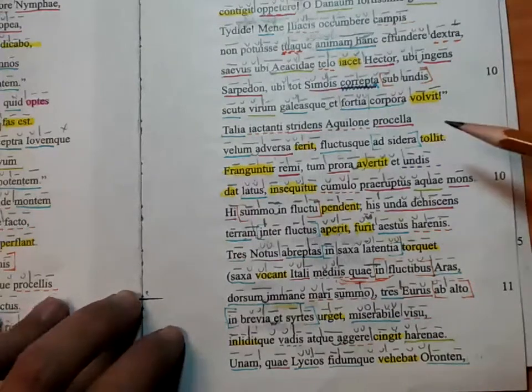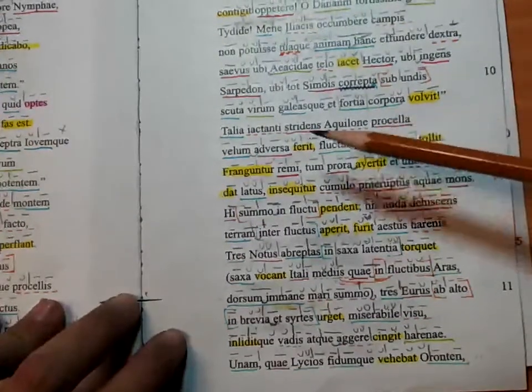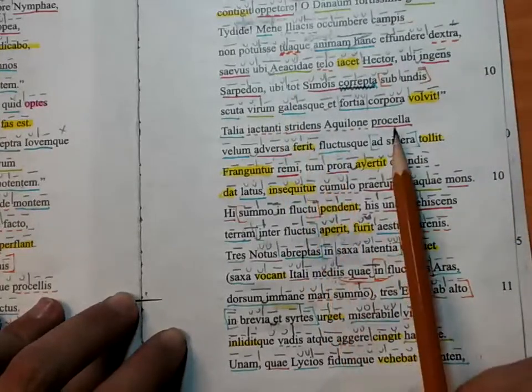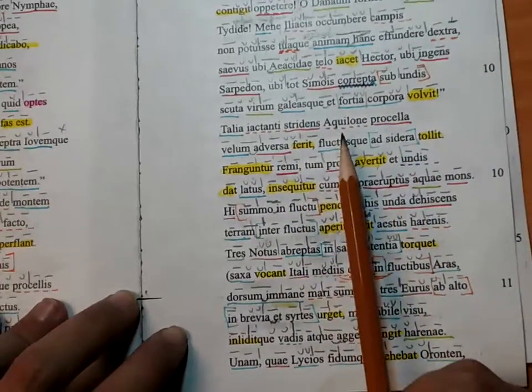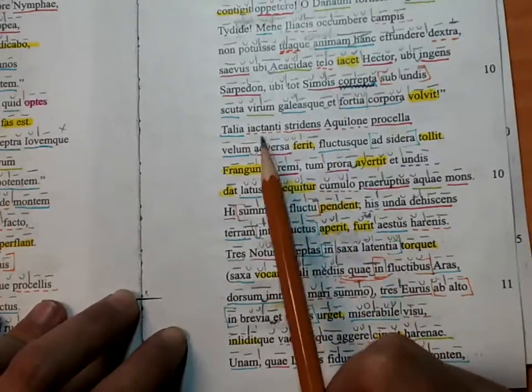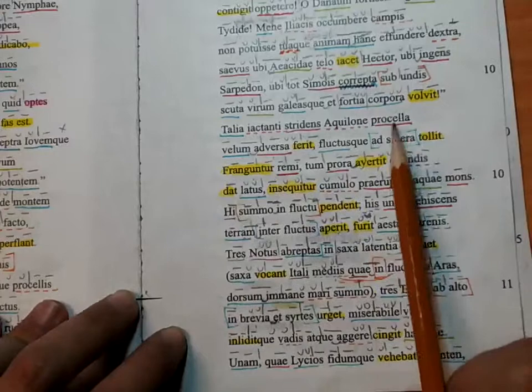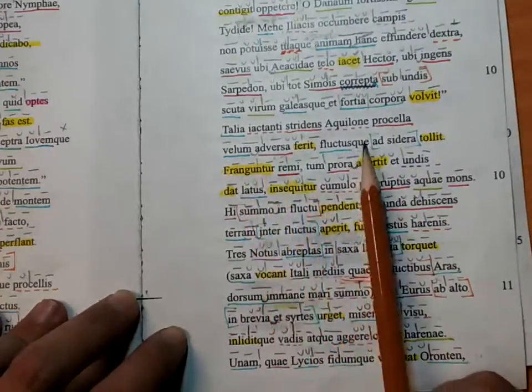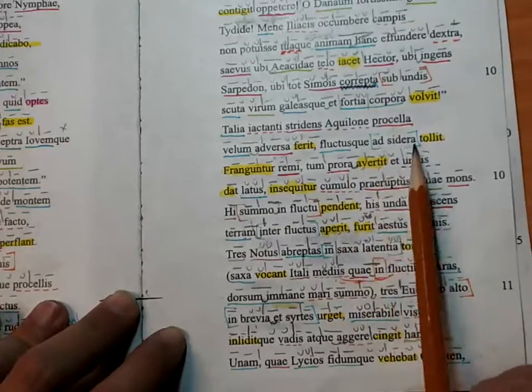Starting with line 102: the roaring gust, or the gust roaring with the north wind, tossing around such things. The gust, having been turned, strikes the sail and raises the waves to the stars.